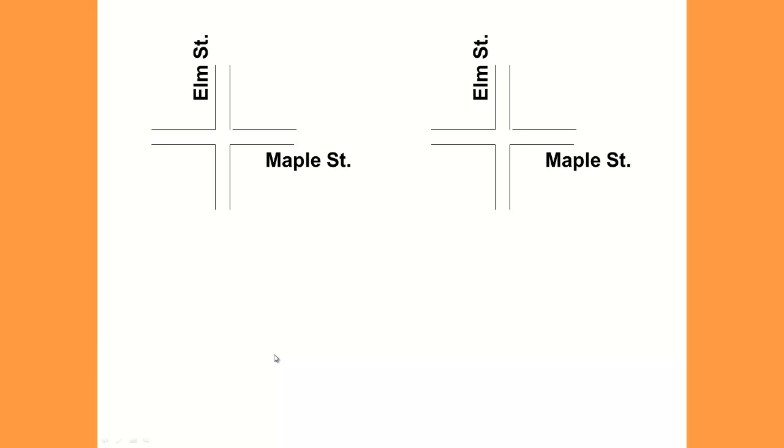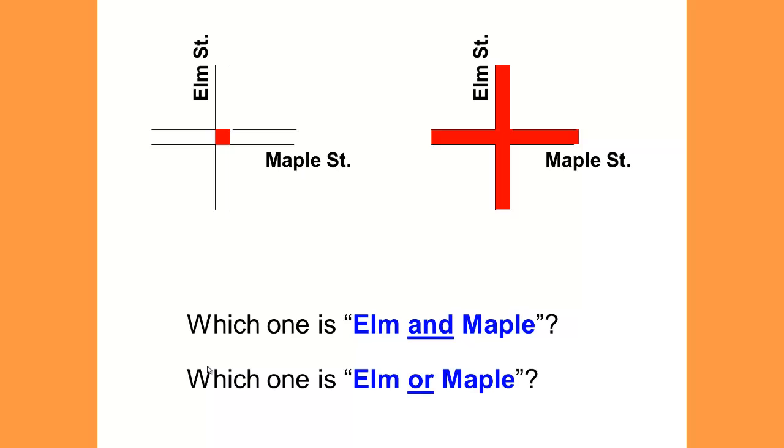Look at the illustration of Elm and Maple Street. On the first picture, Mrs. Borlaug has shaded in the cross section, and on the second illustration, Mrs. Borlaug has shaded the whole picture. Which is the shaded illustration for Elm and Maple? Which one is Elm or Maple?